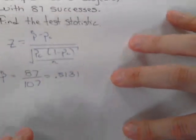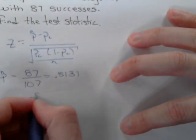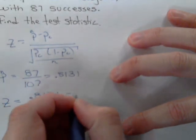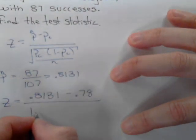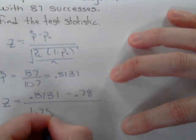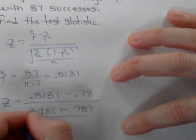Substituting all of these values in for the test statistic, we get z equals p-hat, which is 0.8131 minus 0.78, divided by the square root of 0.78 times 1 minus 0.78, divided by 107.